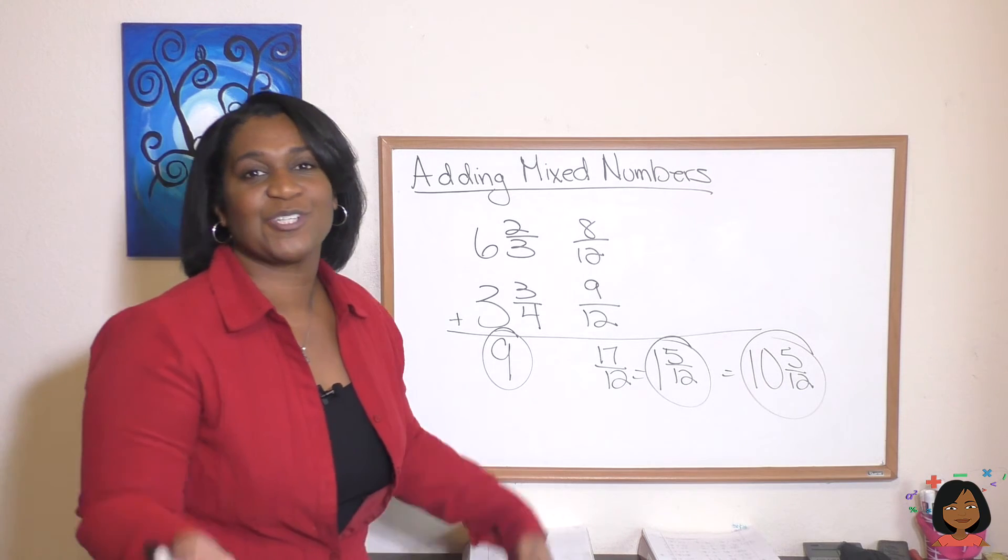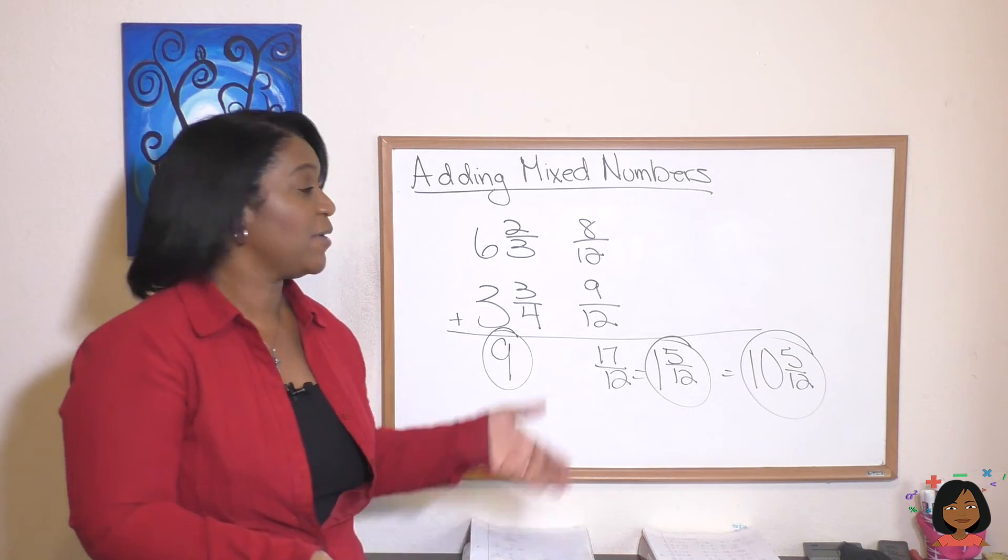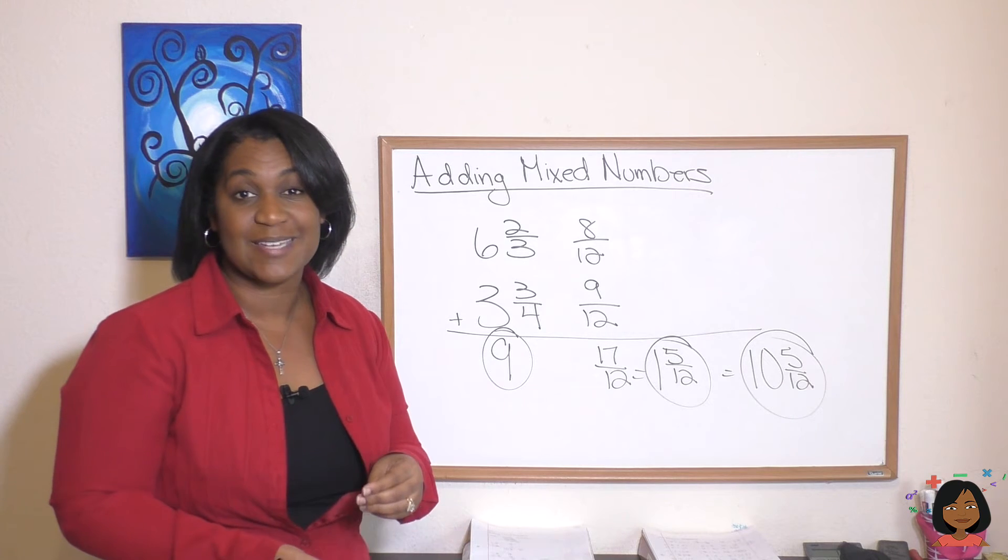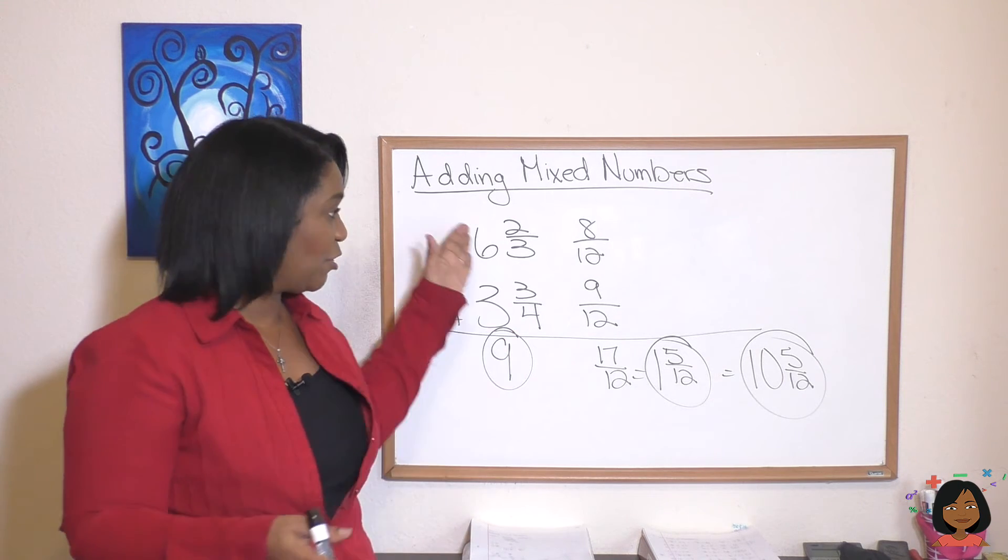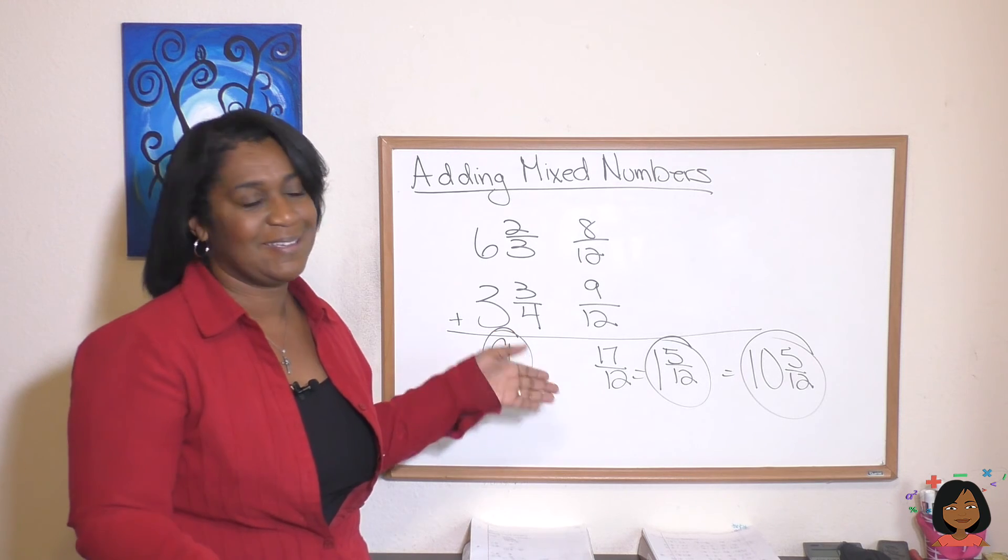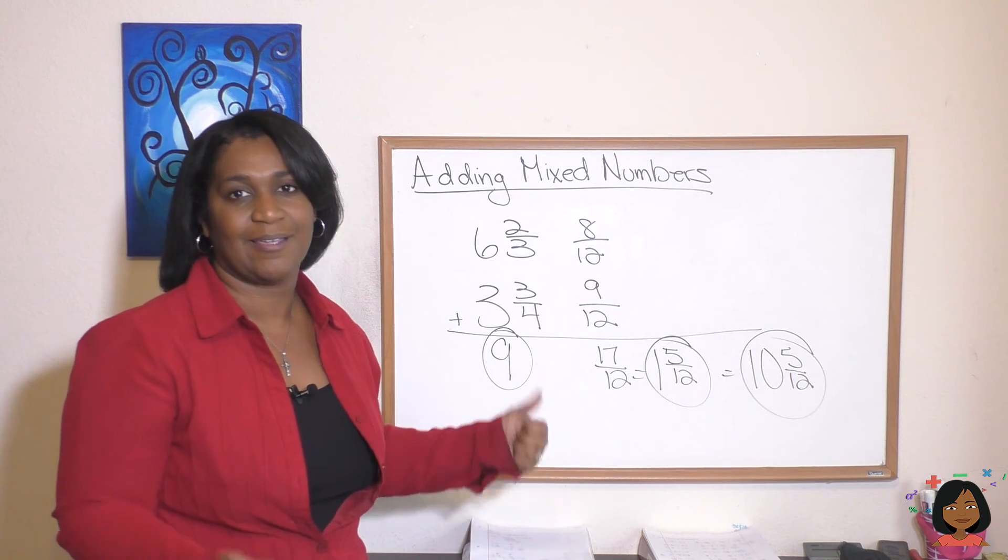So there you go. Just use your SOS technique. You have to first shape, make sure they have the same common denominator by finding your least common multiple. Then do your operation, which means add, and then simplify everything. You're ready to go.